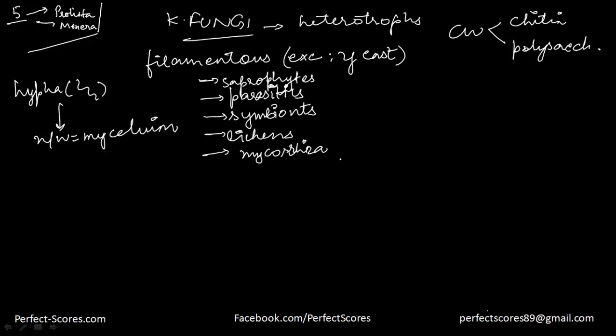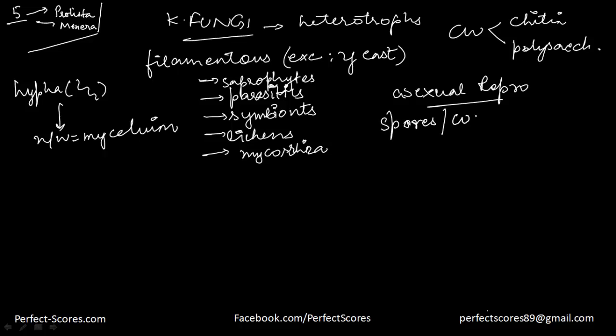Reproduction is usually by vegetative means — it could be fragmentation, fission, or budding. Asexual reproduction takes place with the help of spores known as conidia. The spores can also be called zoospores or sporangiospores.